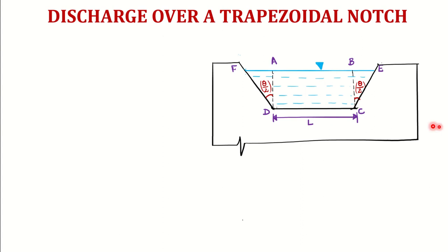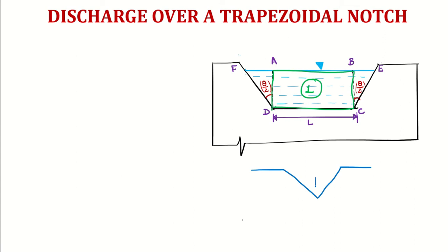In this lecture we are going to discuss the discharge over a trapezoidal notch. A trapezoidal notch is when we make an opening in the shape of a trapezium. This trapezoidal notch can be divided into two parts: one is the rectangular portion forming the center — this is Part 1 — and the other is the triangular portion on each side. When you join both portions together you get a complete V-notch form. This is theta/2 on one side and theta/2 on the other side, so the total angle becomes theta.